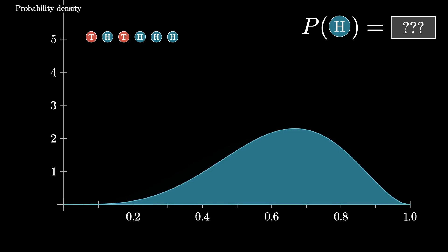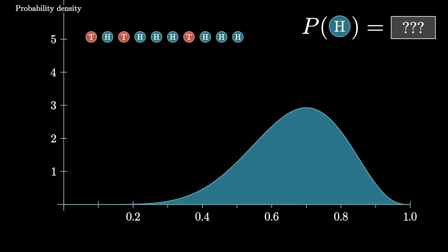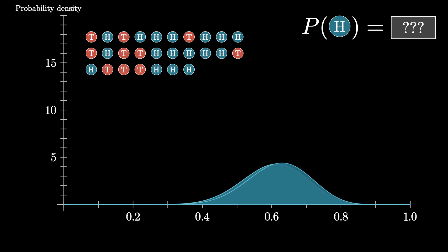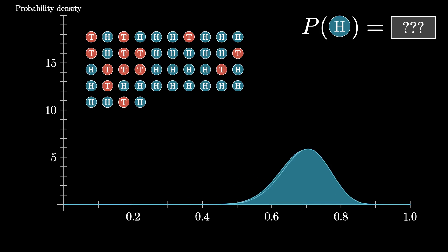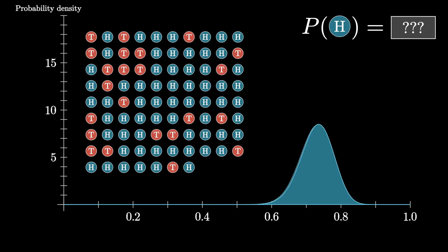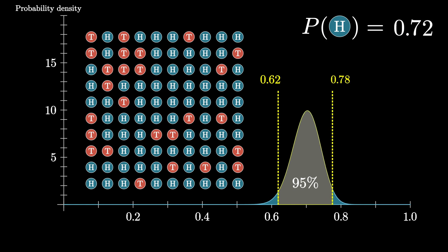Any time you hear about coin flips discussed in probability, it's a generic stand-in for the many real-world situations where you have some kind of random event that can go one of two ways. As we play this out, the narrowness of the plot indicates being more and more sure, and the center concentrates around what the true underlying probability is for that coin. After seeing 100 flips, this model would give a 95% confidence to the true probability of flipping heads being between 0.65 and 0.82. In reality, the simulation was using 0.72. More and more data tightens that confidence interval.